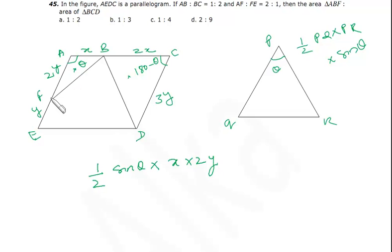Area of triangle AFB divided by area of triangle BCD. That is half, and here the included angle is 180 minus theta, so it is sine 180 minus theta into the sides 3y and 2x, 3y into 2x.